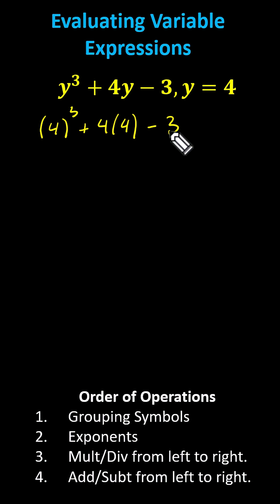Following the order of operations, we simplify four cubed first, which is four times four times four, which is 64. The expression simplifies to 64 plus four times four minus three. Next, we multiply four times four is 16, giving us 64 plus 16 minus three.